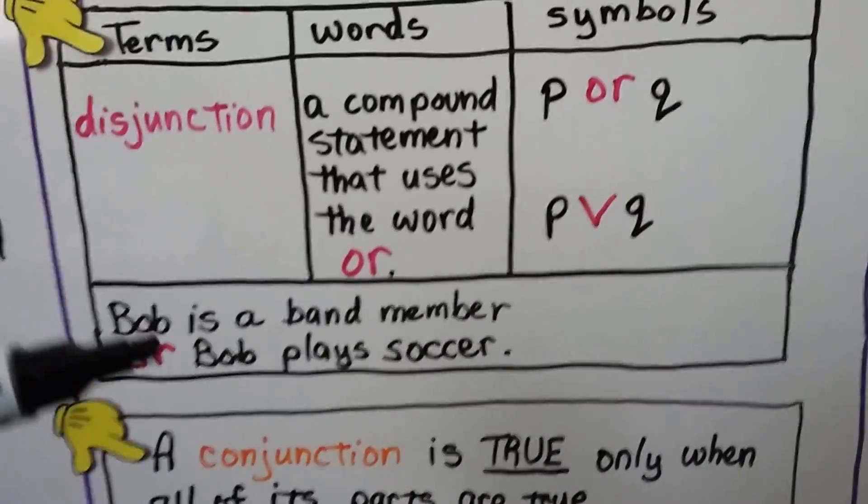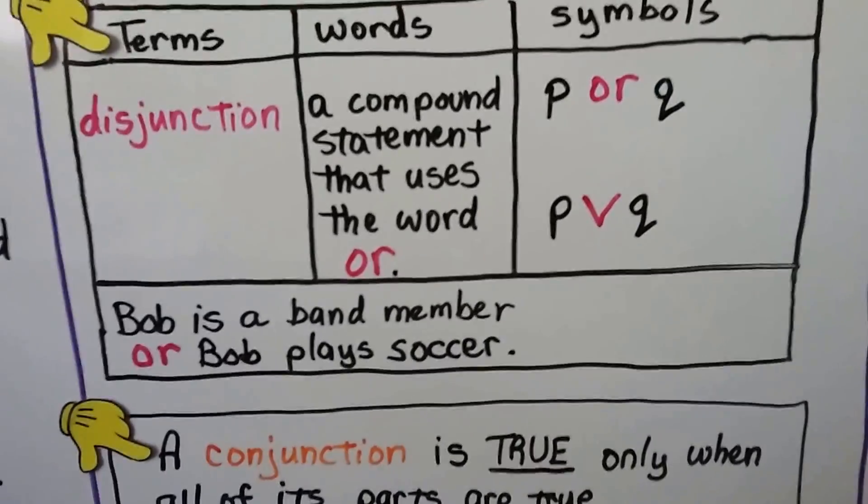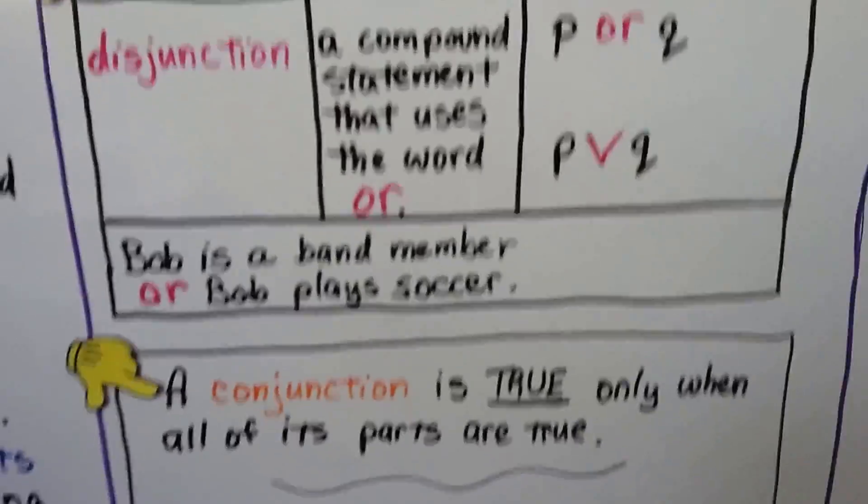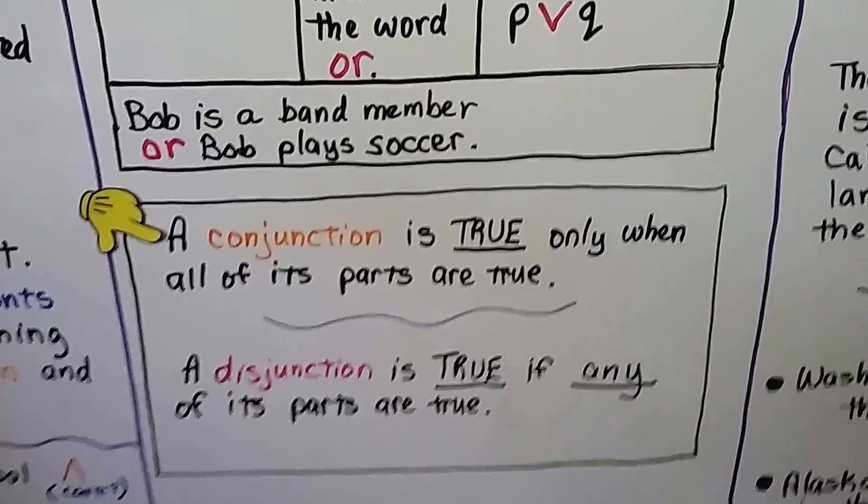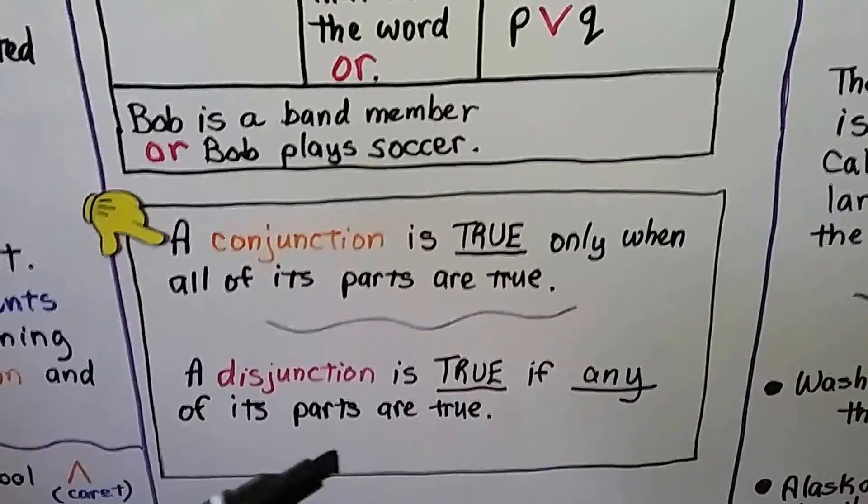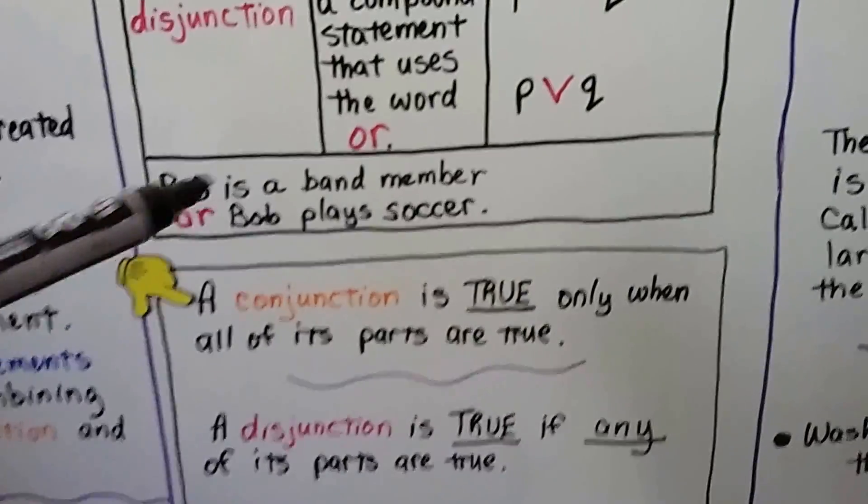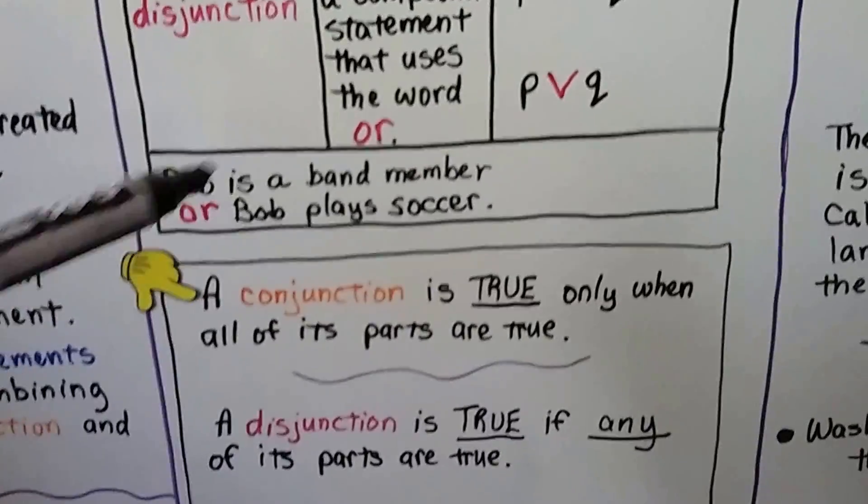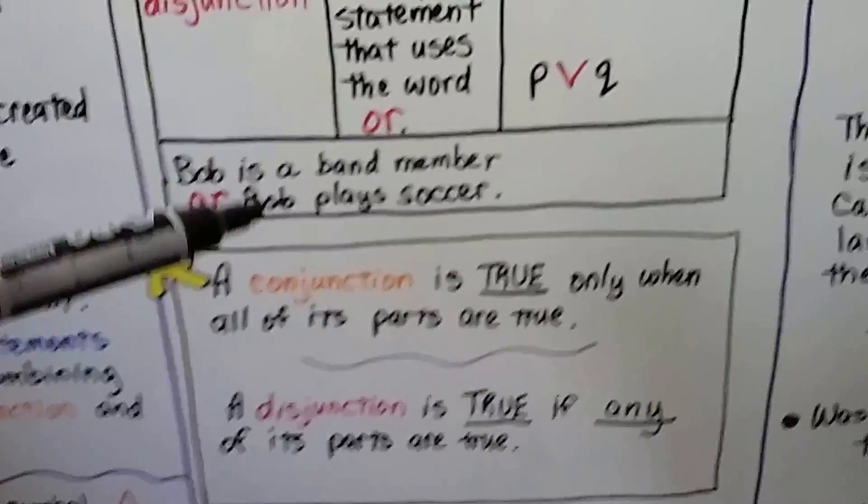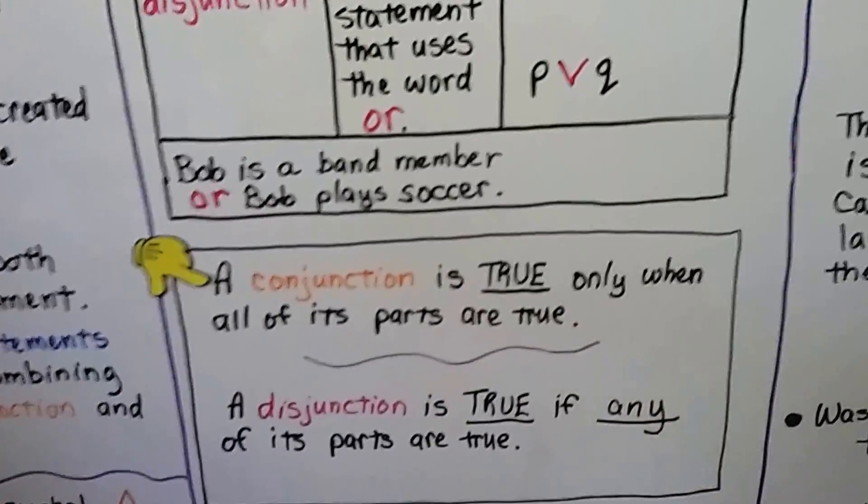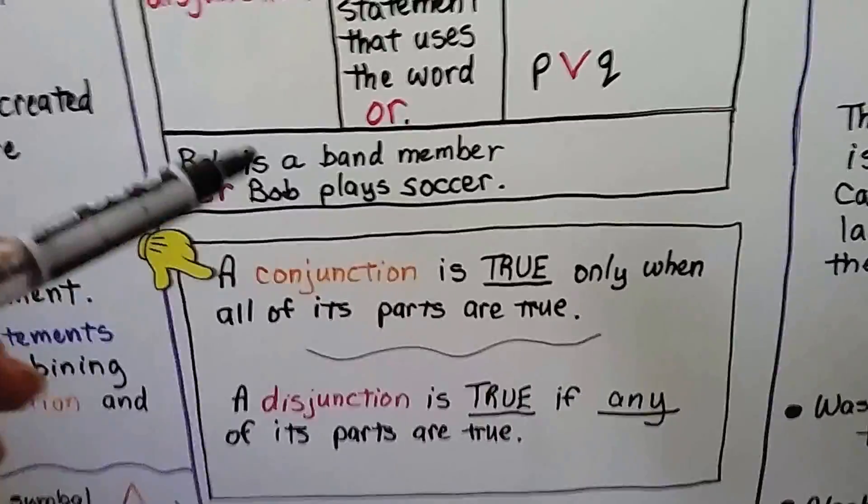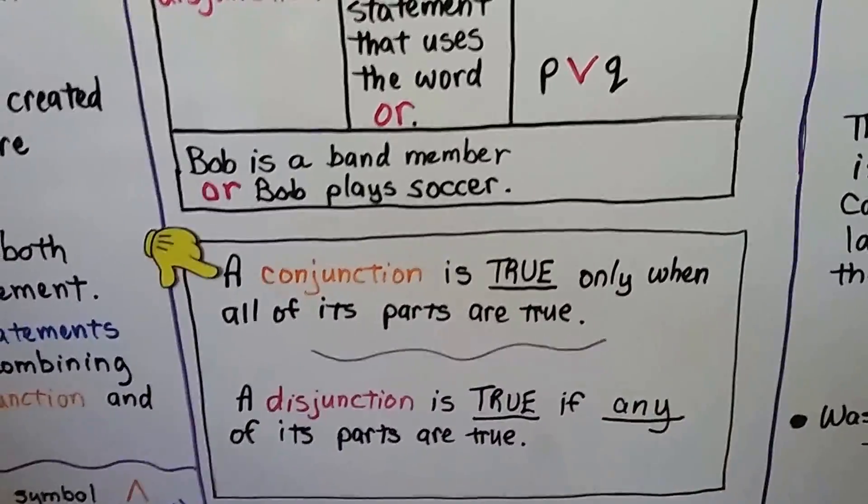In this case, one or the other is true. A conjunction is true only when all of its parts are true. A disjunction is true if any of its parts are true. So this statement is true because he's going to be either one or the other. And if both are false, then the disjunction is false.